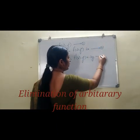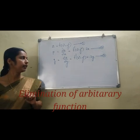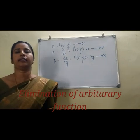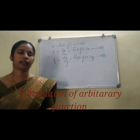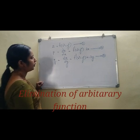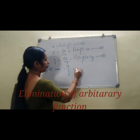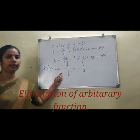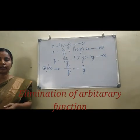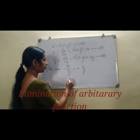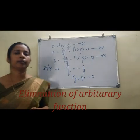Now we have equations 1, 2, and 3. We need to make a PDE which is free from F and its derivatives. Dividing equation 2 by equation 3 gives p/q = 2x/(−2y) = −x/y. This equation contains partial derivatives and is free from F, so it is the required partial differential equation. By rearranging: py + qx = 0.